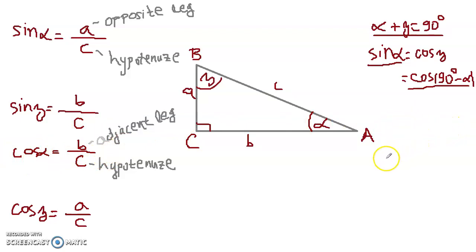Okay, so we can write that in general form. We don't need to use alpha or beta. So we can just say that sine of any angle, sine of angle X is equal to cosine of 90 minus X. And cosine of angle X is sine of 90 minus X.